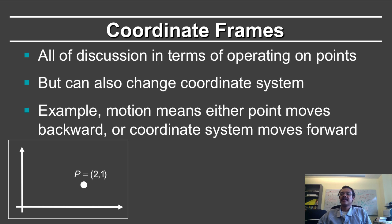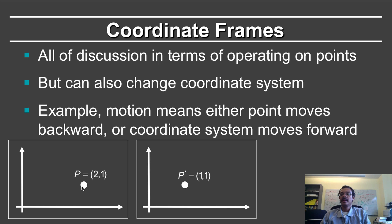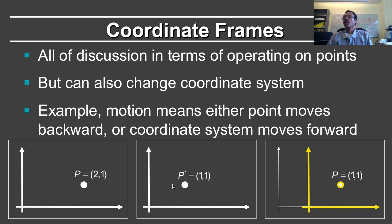So let's look at this with an example. Here we have a point which is located at 2 units along the x-axis, 1 unit along the y-axis. I can now translate that point to the left — a left translation. I can also see this as a change in coordinate frame, where the coordinate frame moves to the right. So the point either moves one unit to the left, or the coordinate frame moves one unit to the right. Both of these interpretations are equivalent, and you can use whichever is more useful for a specific task.